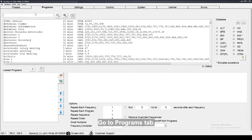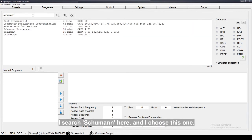Go to Programs tab. For example, I want to imprint Schumann frequencies into water. I search Schumann here, and I choose this one.